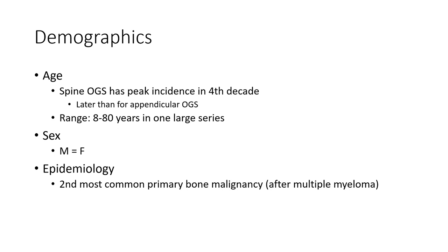Spine osteogenic sarcoma has a peak incidence later than appendicular osteosarcoma, ranging from eight to eighty years in one large series. Male and female are equally affected. Epidemiology: it is the second most common primary bone malignancy after multiple myeloma.